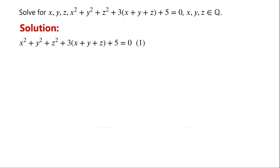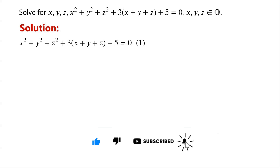But we notice that the equation contains x squared and three x terms, y squared and three y terms, z squared and three z terms. By adding three over two all squared, that is nine over four, to each pair of terms, we can complete the squares.